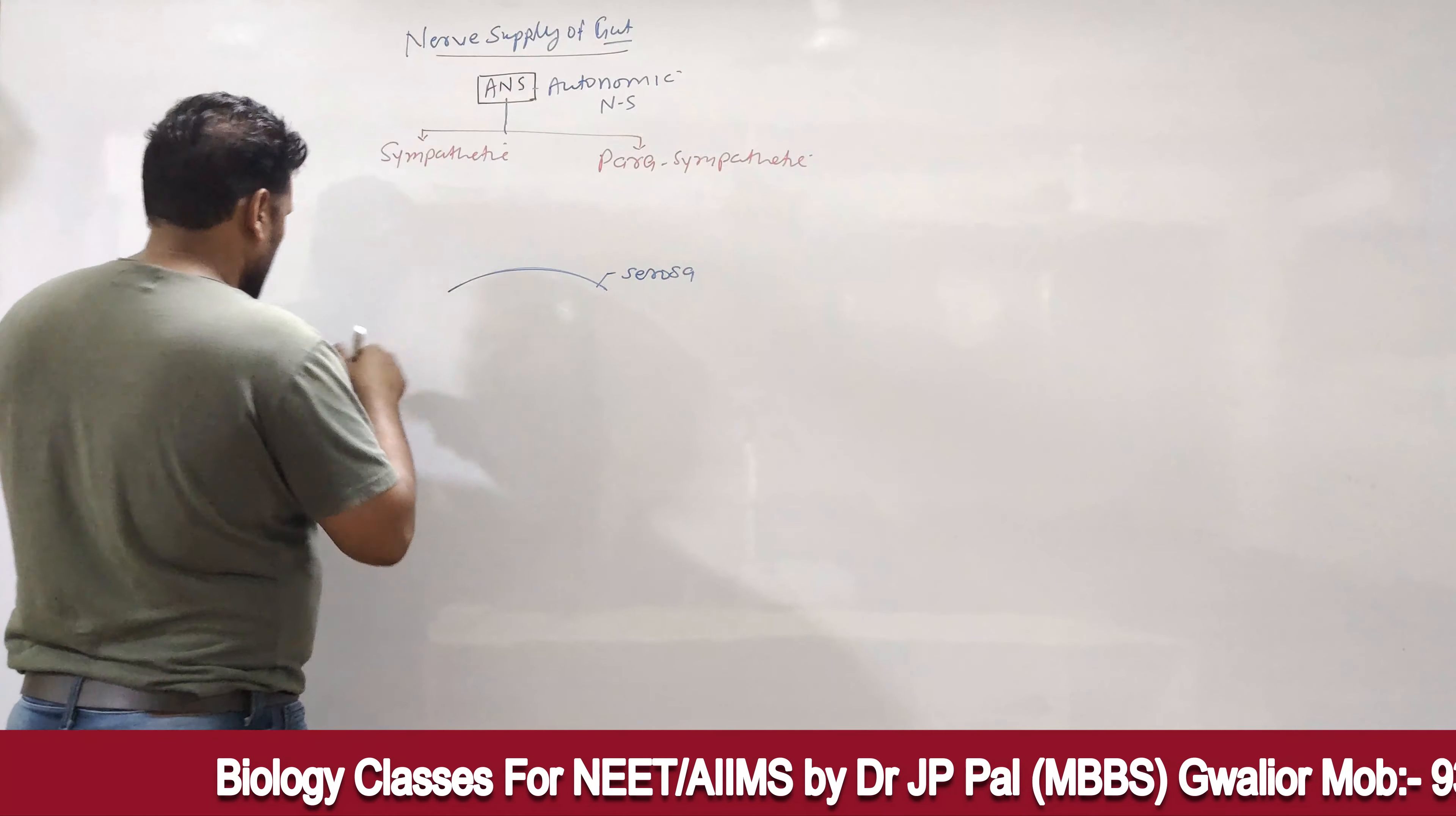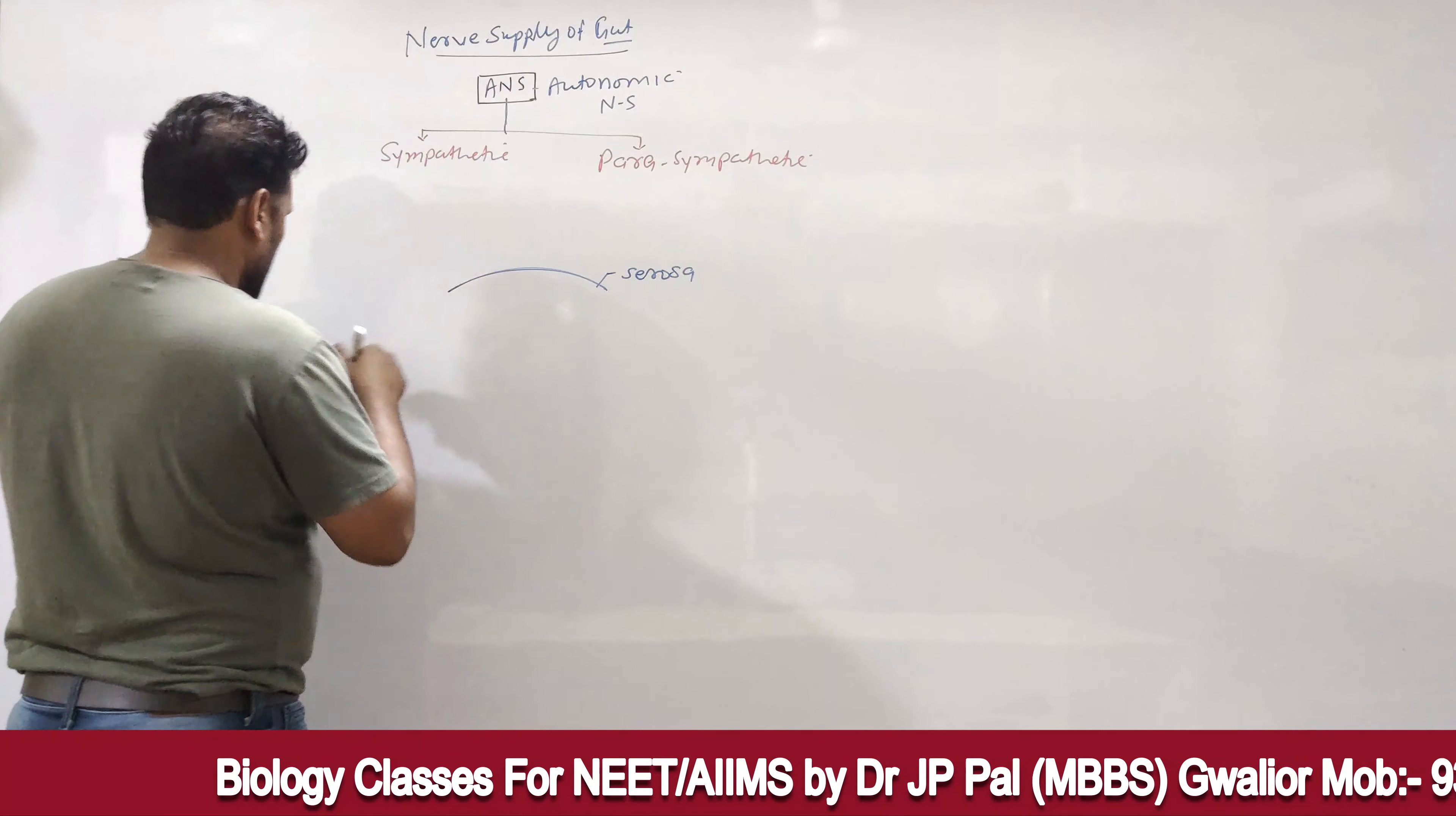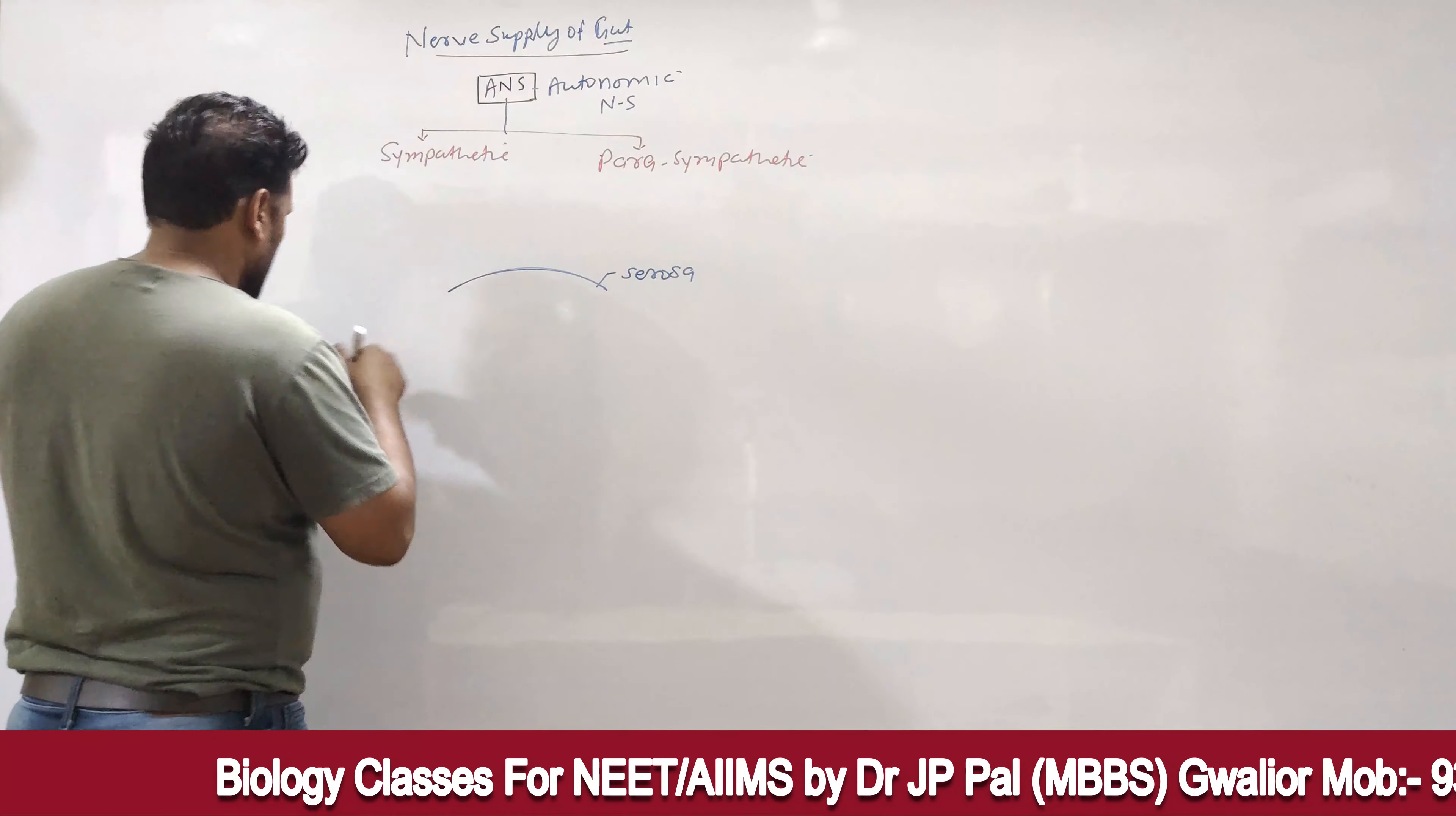When we talk about the elementary channel, we have four layers. Outer layer is the serosa. After we see here, two muscle layers. These are one layer and again this is, for example, we have some layers.